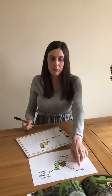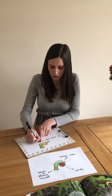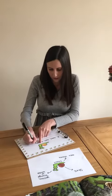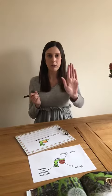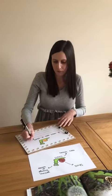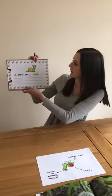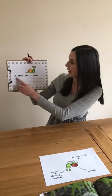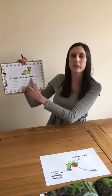A snail has a shell. A snail has a shell, and we can copy this from our word map. Now once we've written our sentence, we need to remember a full stop. So we've written the sentence: a snail has a shell.